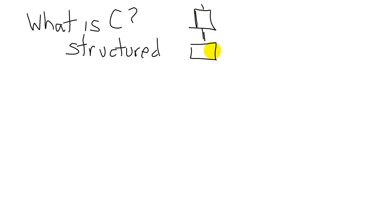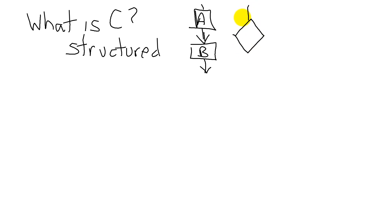The first template is sequential, which means we do A and then we do B. The second template is a decision — we look at some data that we have and we decide to go this way or that way depending on the data. That's a decision template.